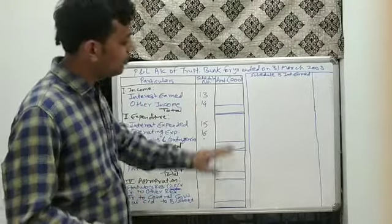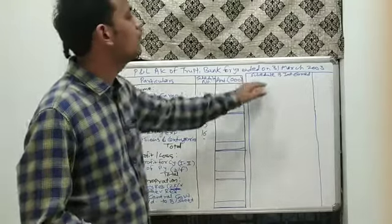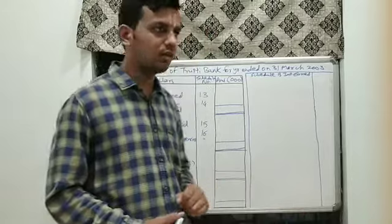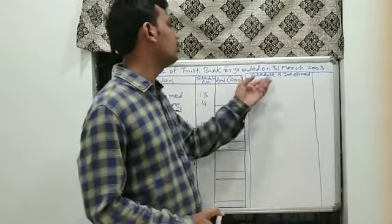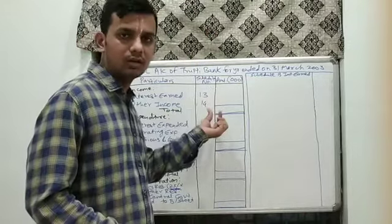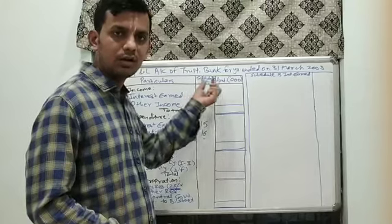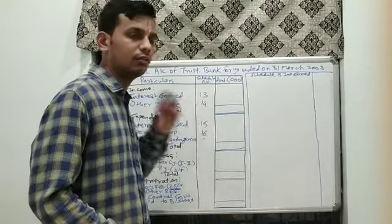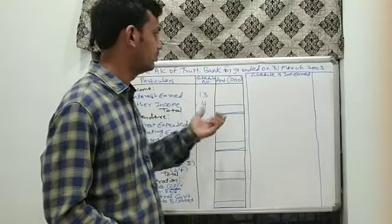To form this solution, we have to prepare four schedules: schedule 13 — interest earned, schedule 14 — other income, schedule 15 — interest paid, and schedule 16 — other operating expenses.